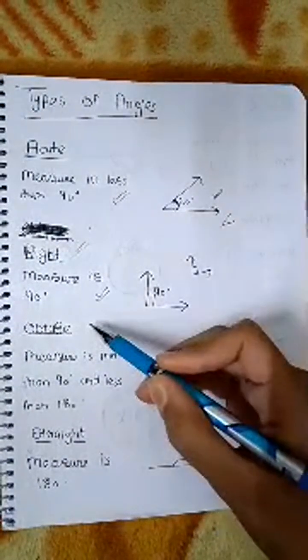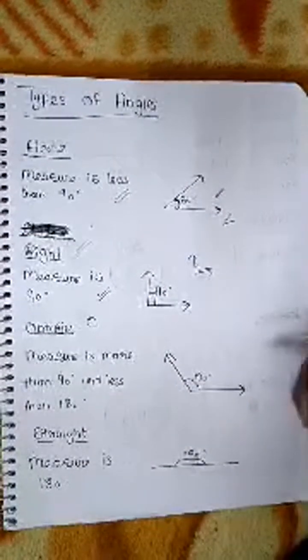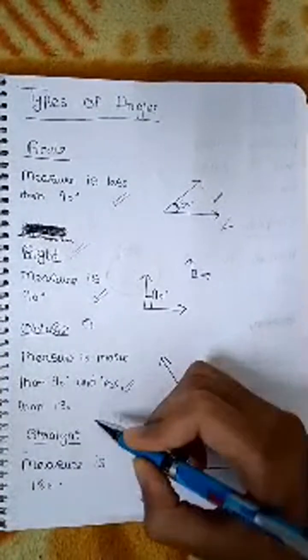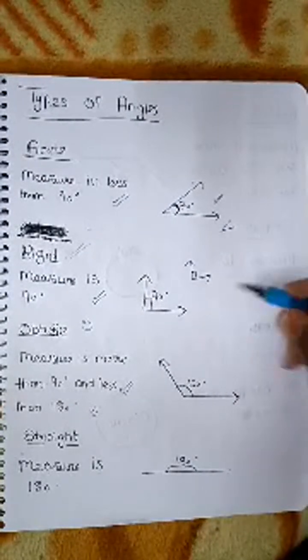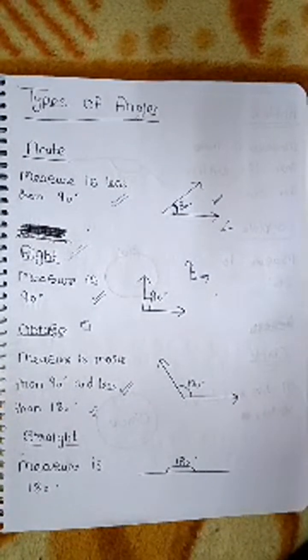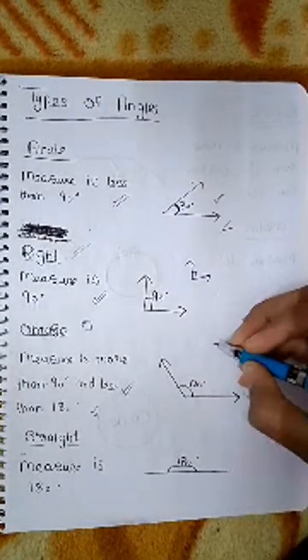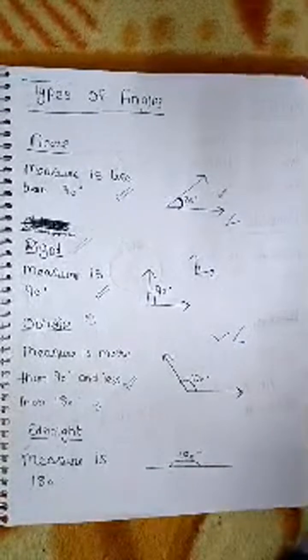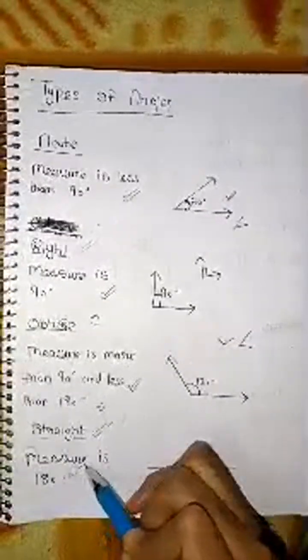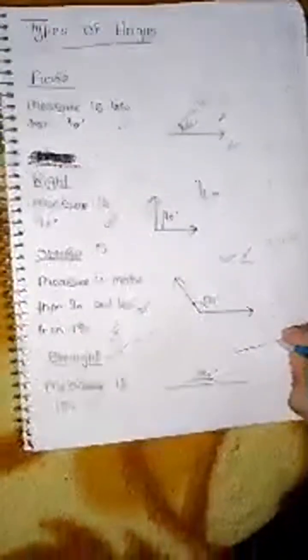Next will be obtuse angle. What is obtuse angle? Its measure is more than 90 degrees but less than 180 degrees. Its shape is formed like this. In the right angle the beak is exactly in the L-shape, and in the obtuse angle the beak is opened like this — it is opened. Next we will be learning about straight angle. Straight angle has no beak. Its measure is exactly 180 degrees. It is formed like a straight line.